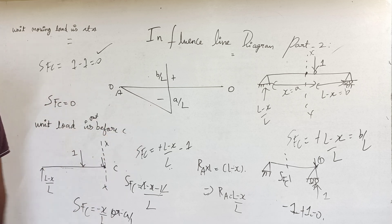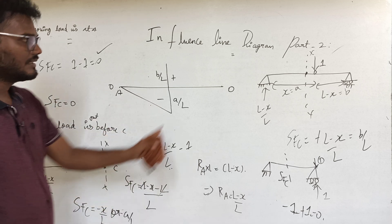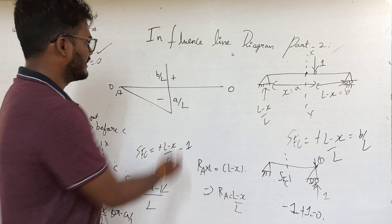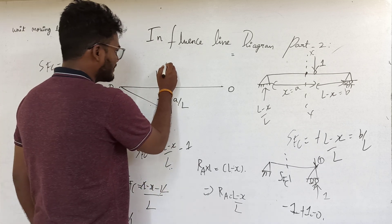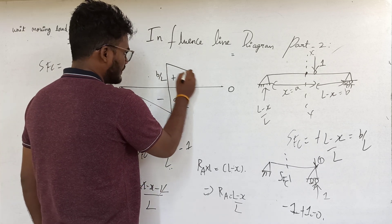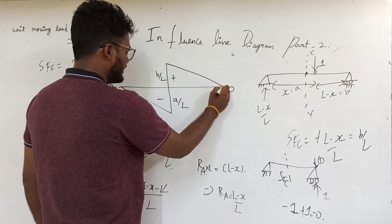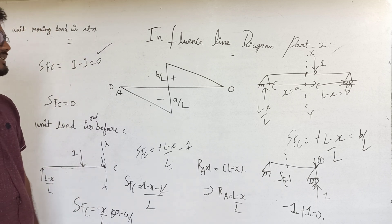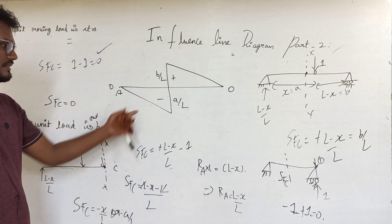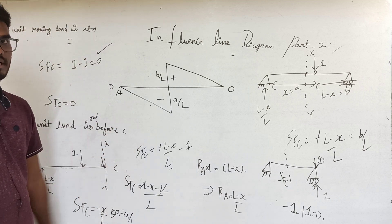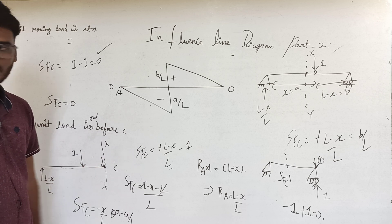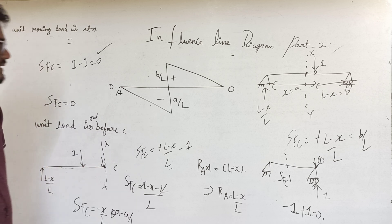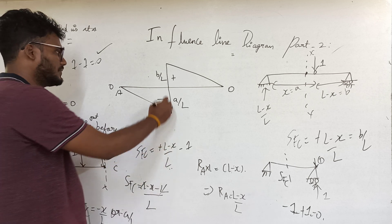At C there is a point: minus A by L on one side and plus B by L on the other side after the transition. The variation is linear. This is the ILD for shear force at C for a simply supported beam.